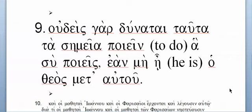Now it's BBG chapter 18, sentence 9, almost done. First thing to notice is you've got a post-positive gar, so you're going to yank that out and throw it to the front of the sentence because of it being post-positive. So you're going to say 'for,' and then you have oudeis.